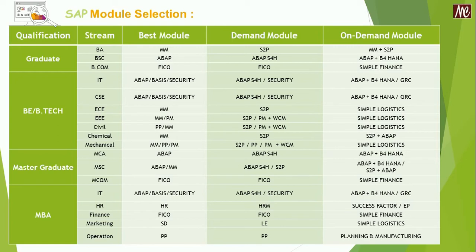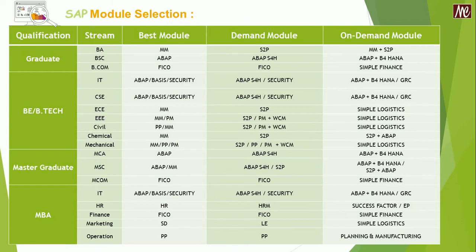Similarly, a technical graduate — BE or BTech — carrying the stream of Information Technology can choose best module as ABAP, Basis, or Security. There are three different modules in their bucket, and they can choose the appropriate one. In the demand module, they can choose ABAP in S/4HANA or Security. If we consider the on-demand module, then ABAP plus S/4HANA, or GRC. Similarly, other stream members — those who come under BE/BTech, Master's graduate, or MBA — can choose their respective modules from the presented screen, and it will definitely help you out.